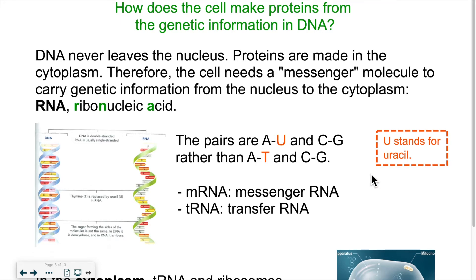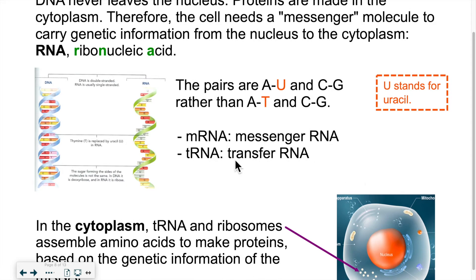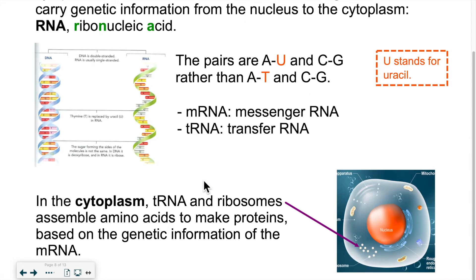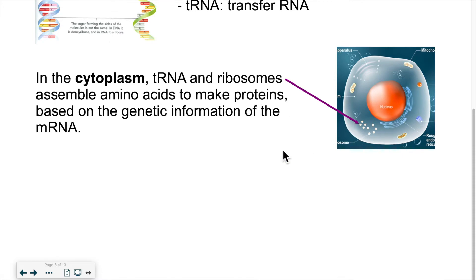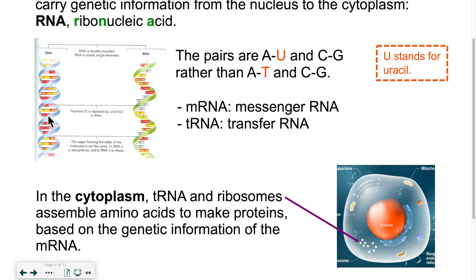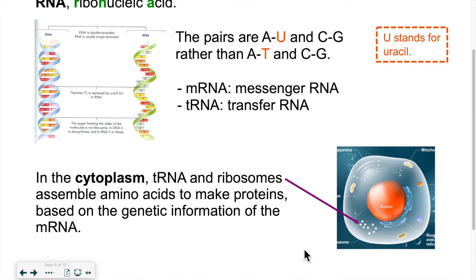There are two types of RNA: mRNA, called messenger RNA, and tRNA, called transfer RNA. Once the RNA is made, it goes into the cytoplasm and finds a ribosome. It's inside the ribosome that proteins are made — where the amino acids are assembled. The RNA is a copy of the DNA that is allowed to leave the nucleus and go to the ribosomes in the cytoplasm.